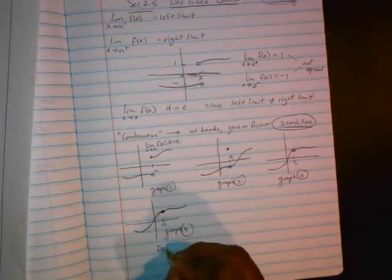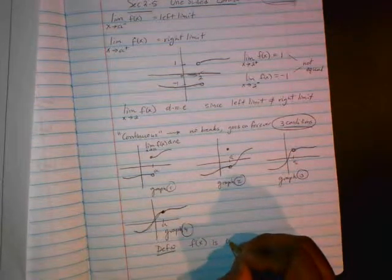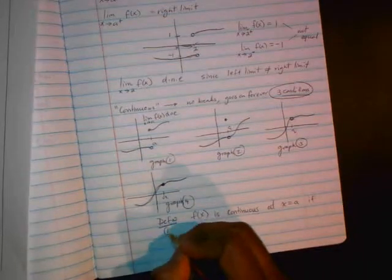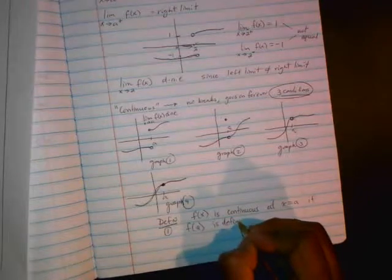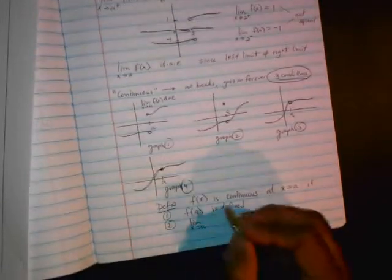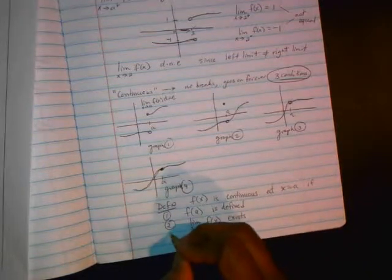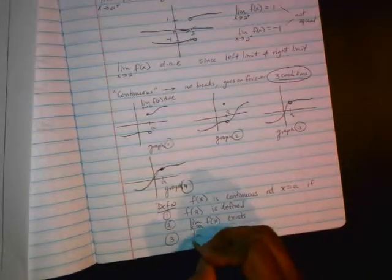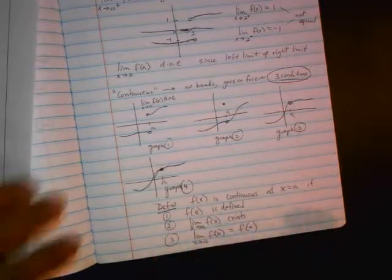Here's the definition for continuity. f of x is continuous at x equals A if, first condition, f of A is defined. You need a y value at that point. Second condition, the limit as x approaches A of f of x must exist. And finally, the third condition is that this limit should equal the f of A, the y value.